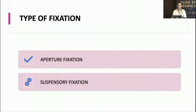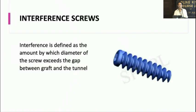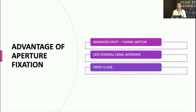Fixation methods are either aperture fixation or suspensory fixation. Aperture fixation uses interference screws, while suspensory fixation can be cortical or cancellous. Interference is defined as the amount by which the screw diameter exceeds the space between the graft and the tunnel, and is considered the gold standard. It minimizes tunnel movement, reduces femoral widening, and creep is also less.